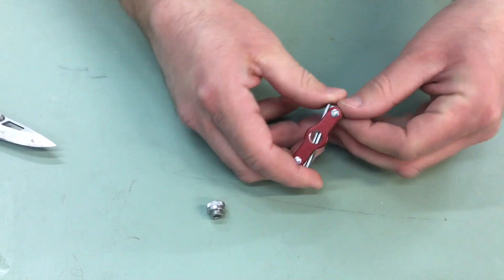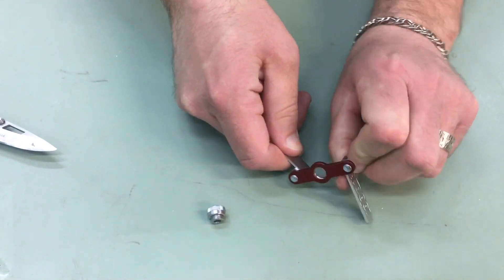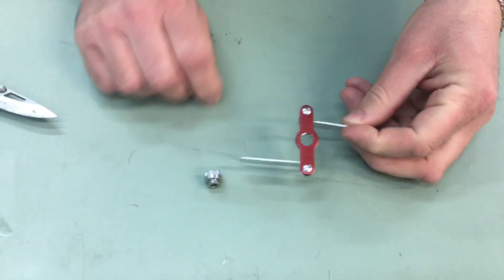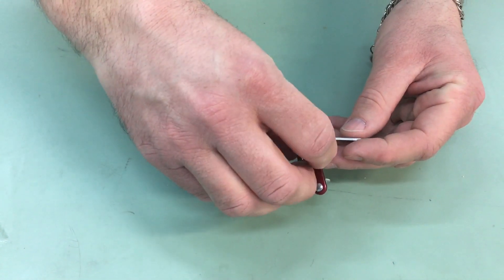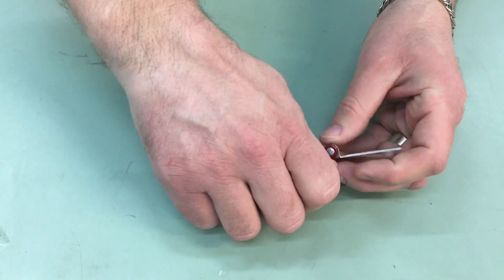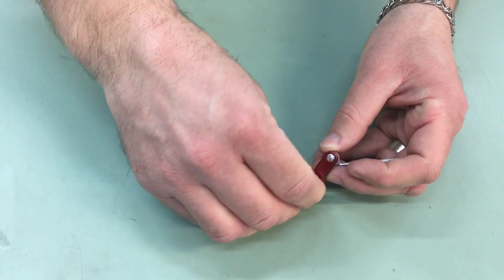So how this works is you have two different wings and you have your bushing. You take your bushing and this gets screwed into the center of the jig.